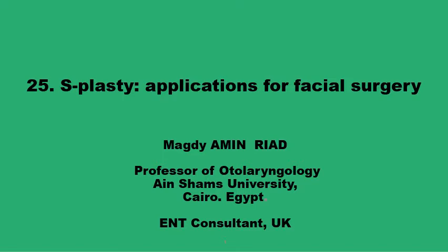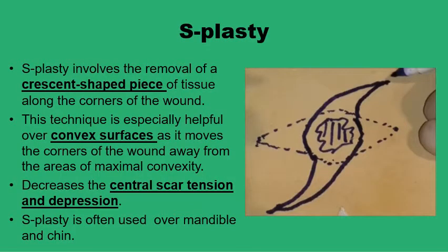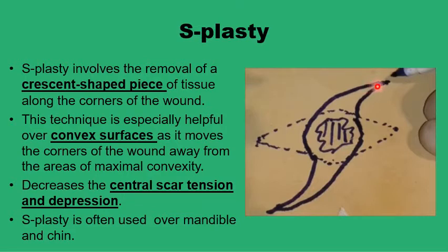It is particularly useful over convex surfaces in the face. Much like the conventional elliptical excision of a lesion together with a safety margin — rather than a circular excision — to prevent the formation of dog ears. The acoplasty provides the same advantage, but rather than having a triangle at the ends, you now have a crescent. This is longer, allowing the 3-to-1 or 4-to-1 ratio in a smaller space, with a more acute angle at the end to avoid dog ears. It's particularly useful to prevent tension on the central part of the wound over convex surfaces like the nasal bridge or the chin.